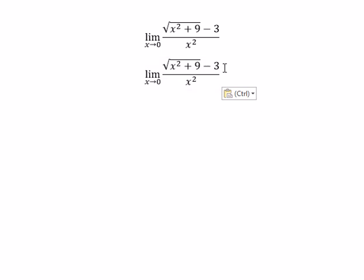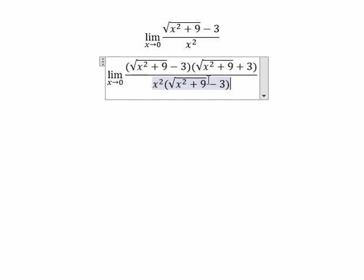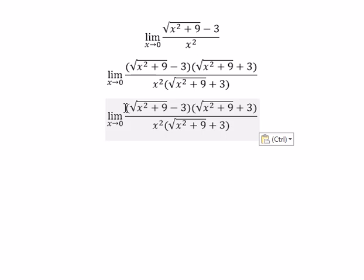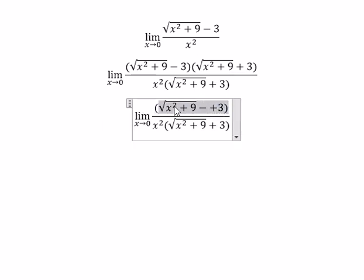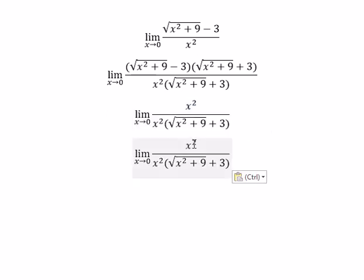On numerator and denominator. Next, on the numerator we can change to x squared plus 9 minus 9. This number will cancel. X squared divided by x squared, you get about number 1.